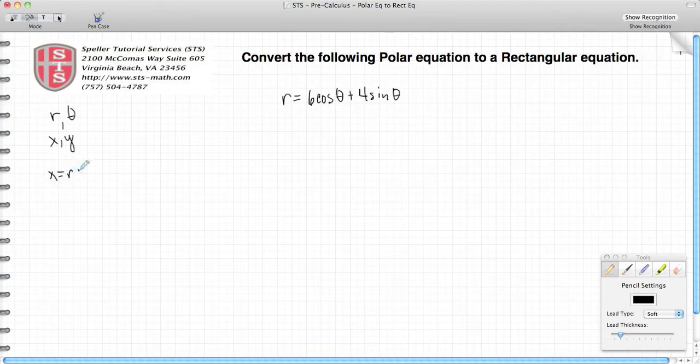We know that x equals r cosine theta, y equals r sine theta. We know that r squared equals x squared plus y squared, and we also know that tangent theta equals y over x. Depending on the polar coordinate that you start with, you may use one or some of these to get to the end result. So let's start with what we have here.